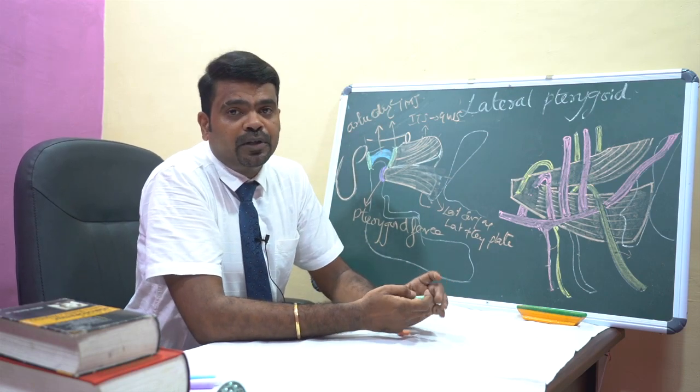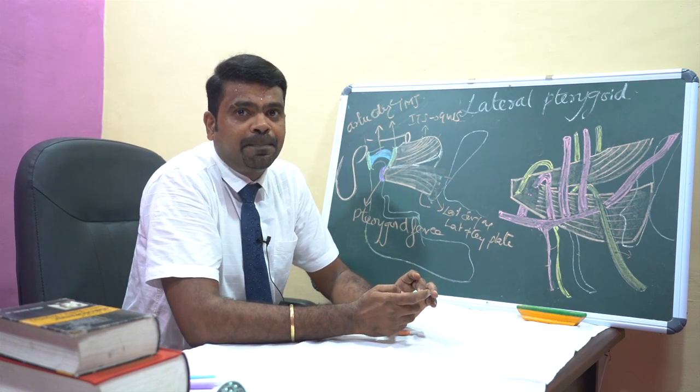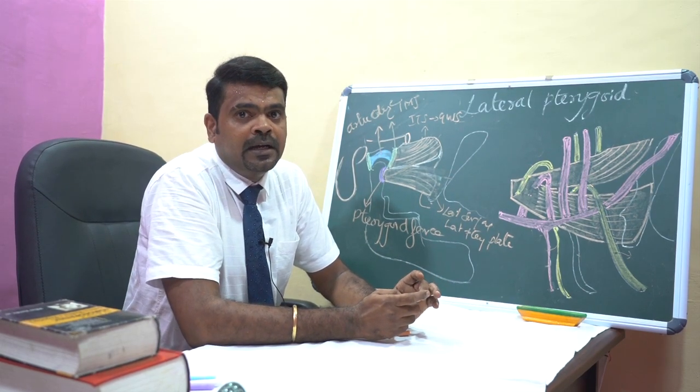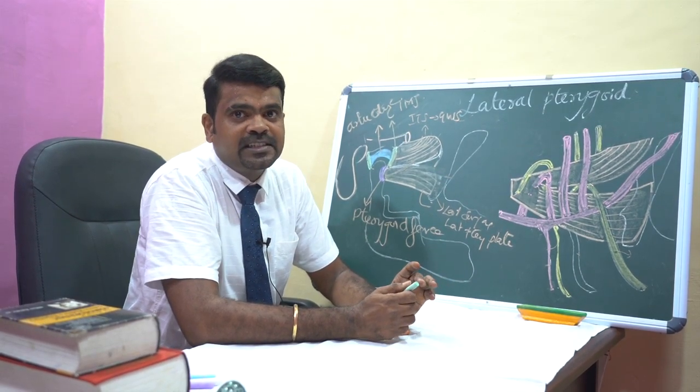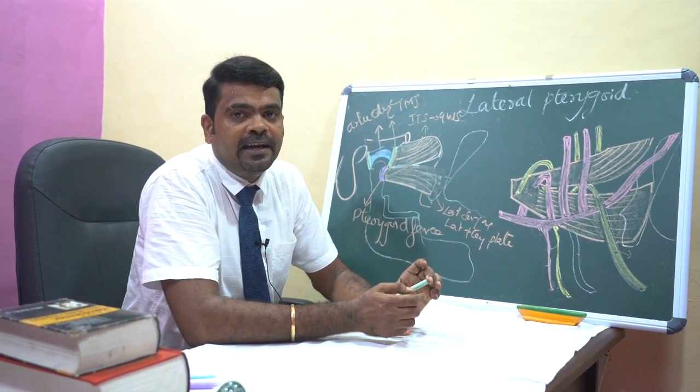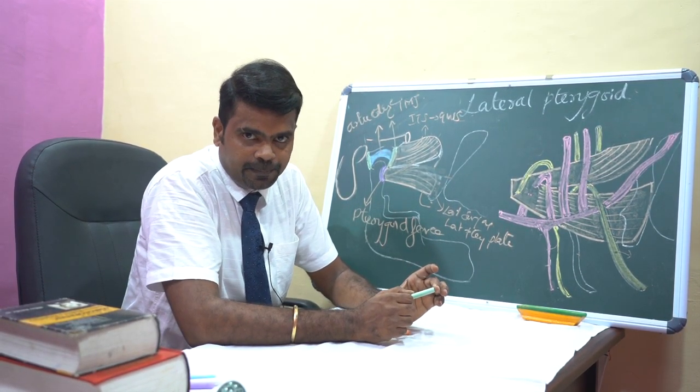When we talk about the nerve supply, the lateral pterygoid muscle is supplied by the nerve to lateral pterygoid, which is a branch of the anterior division of the mandibular nerve.